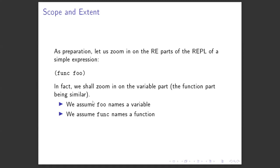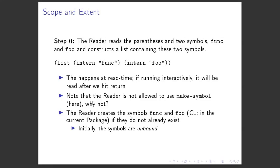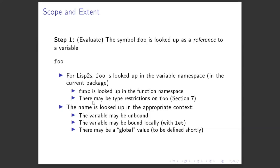Let's say we have a simple function call: a set of parentheses with a function as the first entry and some parameter as the second. The reader, when it reads this, will create the symbol for the function if it doesn't exist already, and creates the symbol foo if it doesn't exist already, and returns a list of those symbols which gets passed to the evaluator. They are no longer strings; they are symbols, and the symbols may or may not have bindings. So func is looked up as a function and foo is looked up as a variable.